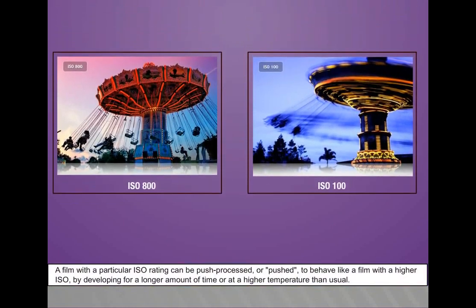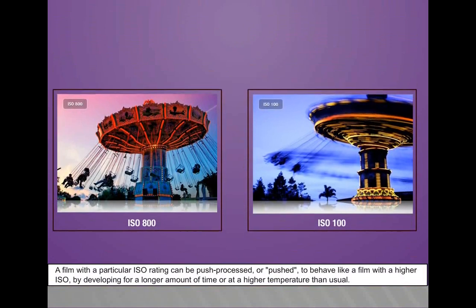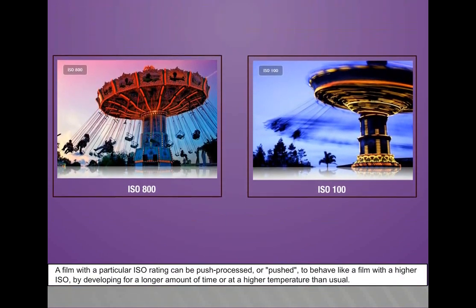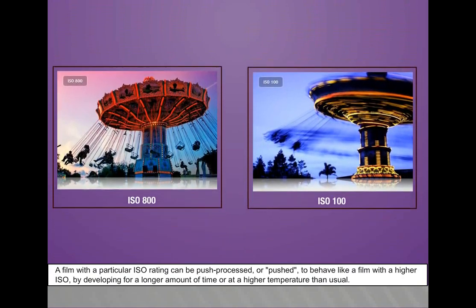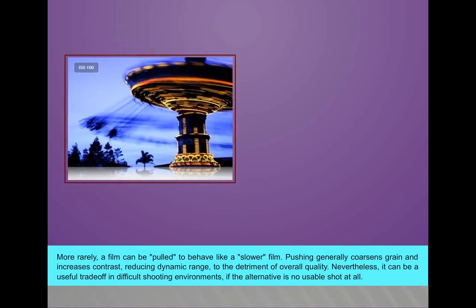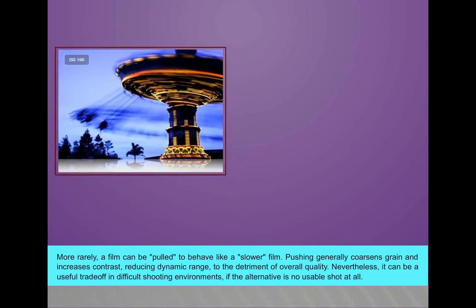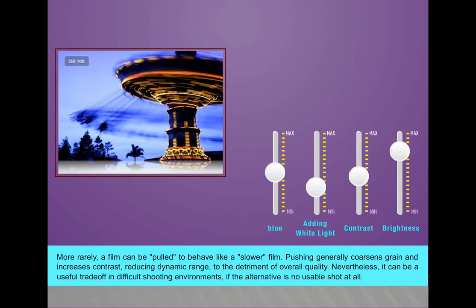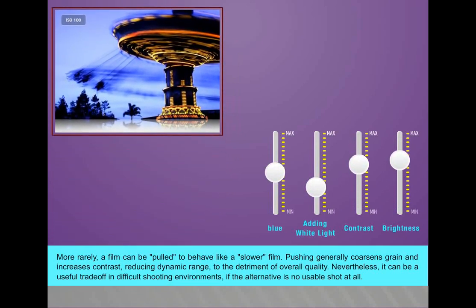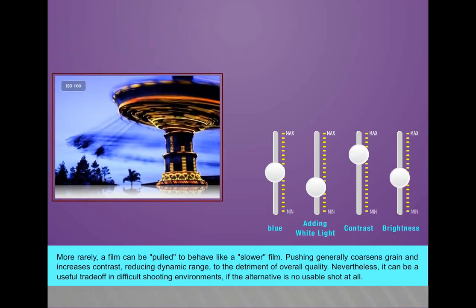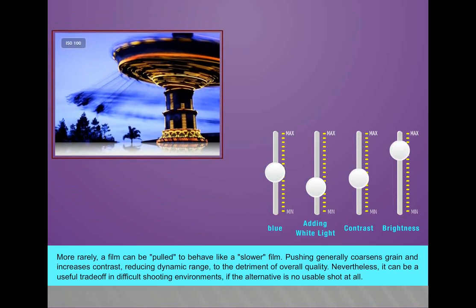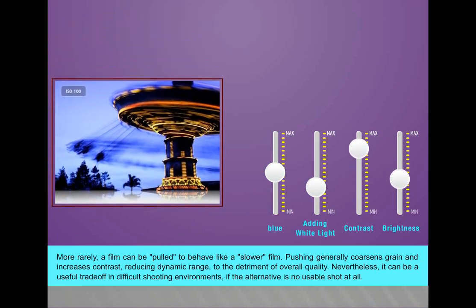A film with a particular ISO rating can be pushed to behave like a film with a higher ISO by developing for a longer amount of time or at a higher temperature than usual. More rarely, a film can be pulled to behave like a slower film. Pushing generally coarsens grain and increases contrast, reducing dynamic range to the detriment of overall quality. Nevertheless, it can be a useful trade-off in difficult shooting environments if the alternative is no usable shot at all.